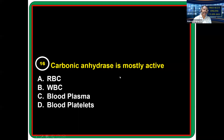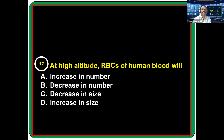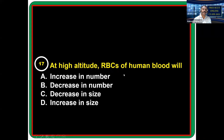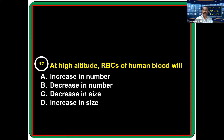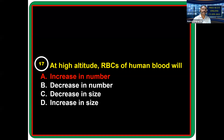Carbonic anhydrase is most active in red blood cells (RBCs). At high altitude, RBCs in human blood will increase in number.